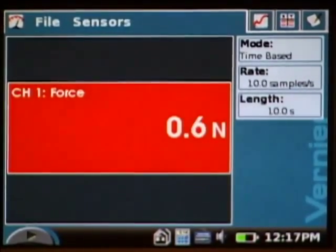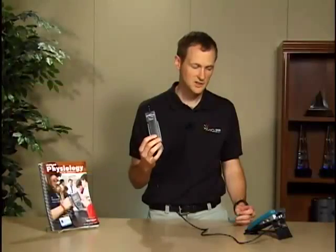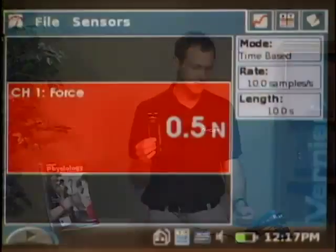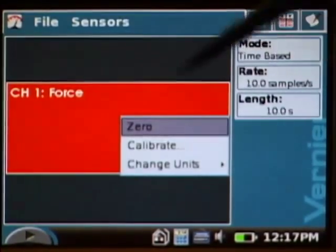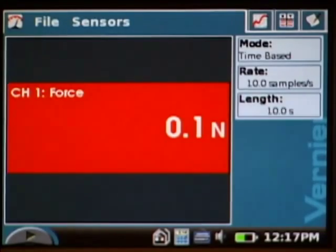Before I begin the run, I want to zero the sensor. What I need to do is just hold the sensor in the same orientation I'm going to be using it, and then tap anywhere in the red portion, and select zero. That just defines the current setting as zero newtons.